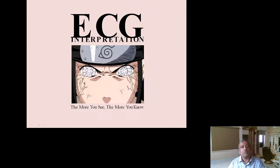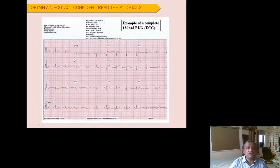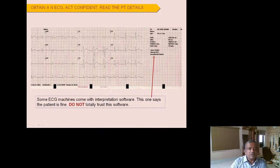ECG interpretation improves with practice — the more tracings you see in clinical practice, the more you master it. A computerized ECG machine provides heart rate, RR interval, P duration, PR interval, QRS duration, axis, QT, and corrected QT interval along with a diagnosis. However, don't rely too much on the computerized interpretation. Always try to learn manual interpretation as if you had only a basic manual ECG machine.